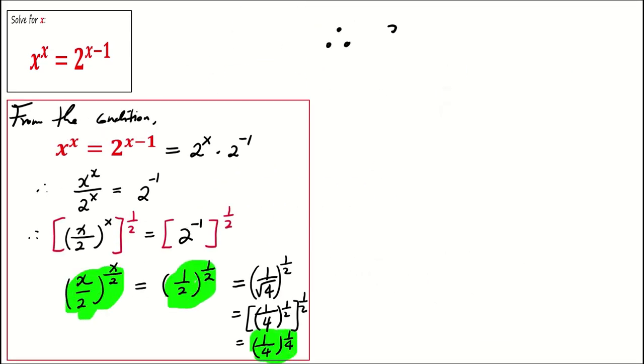This implies that x over 2 equals half or 1 over 4. Hence x equals 1 or x equals half.